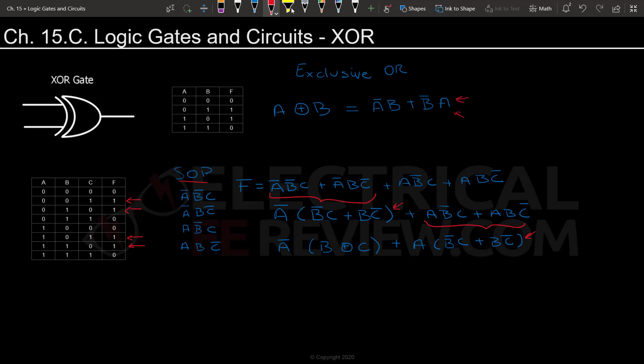A very important thing to remember is that XOR gates can only have two inputs. You can go around it by cascading two XOR gates. Okay. So here we have another XOR.